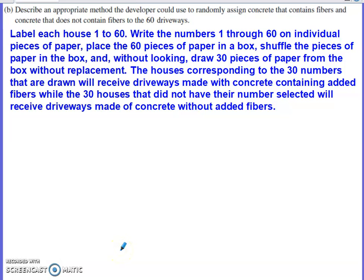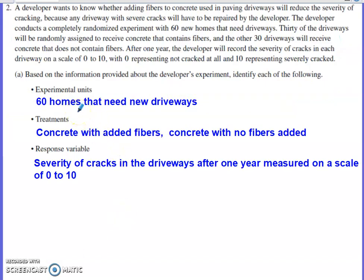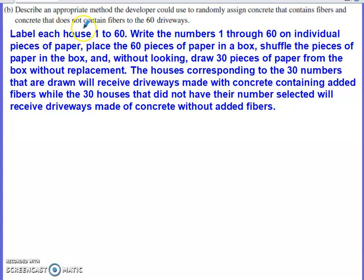When I did part B, that's what caused me to go back and change my experimental units decision for part A. Part B says to describe an appropriate method the developer could use to randomly assign concrete with fibers and concrete without fibers to all 60 driveways. I realized the houses don't yet have driveways, so when deciding which house receives what type of driveway, I should label the houses from 1 to 60. What's being prescribed these treatments are the 60 homes — the homes are the things receiving the treatments, not the driveways themselves.